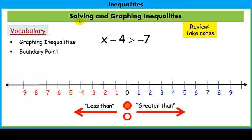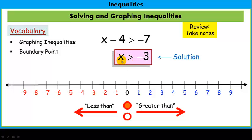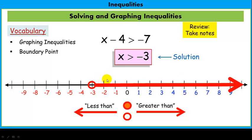When solving inequalities, we solve them very similarly to equations — we want to get x alone. So if we have x minus 4 greater than negative 7, we add 4 to both sides and get x is greater than negative 3. This is our solution. Negative 3 is our boundary point. Since it doesn't include negative 3, we don't fill it in, and we draw the arrow to the right for all numbers greater than negative 3.